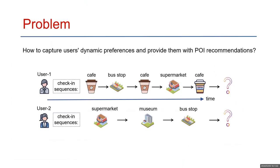Here's the problem we want to solve. In location-based social networks, users check in at their favorite POIs, leaving behind a vast amount of check-in data. How to utilize users' check-in data to provide users with satisfactory recommendations is the problem we want to solve.